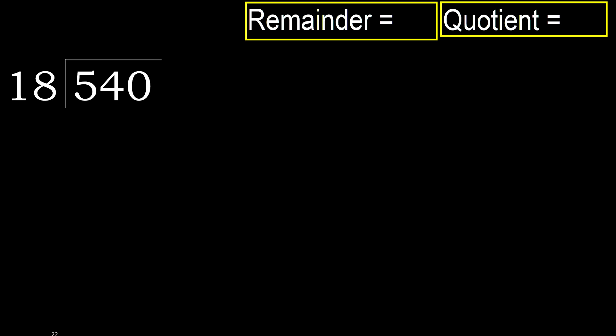540 divided by 18. 5 is less, therefore next. 54 is not less, therefore with 54: 18 multiplied by which number is nearest to 54 but not greater?